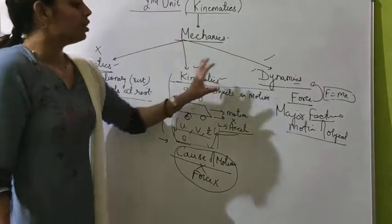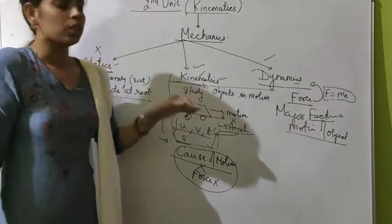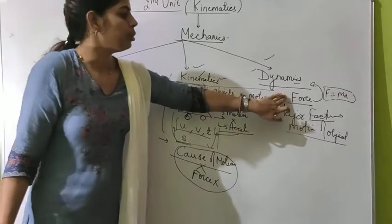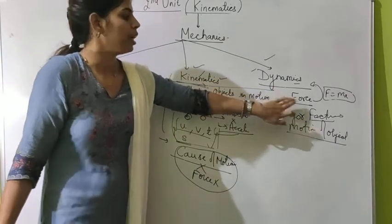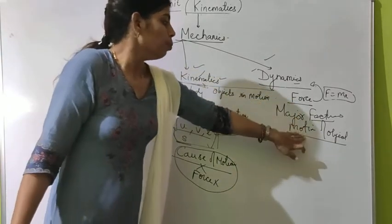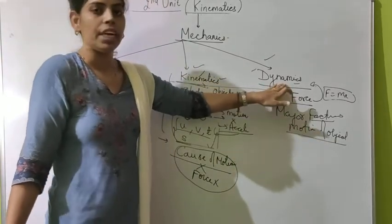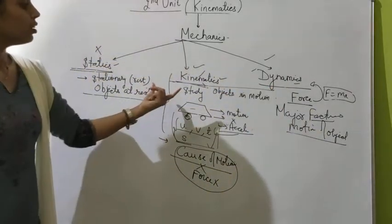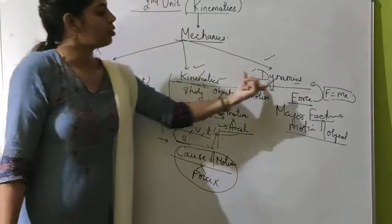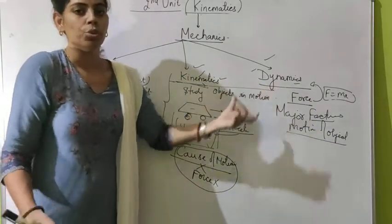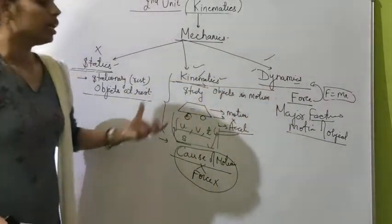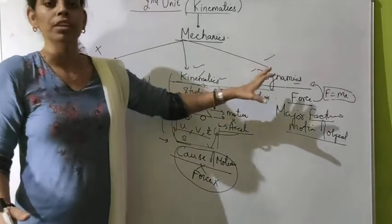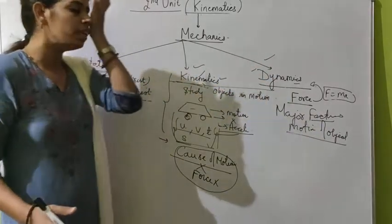The famous equations V = U + AT, S = UT + ½AT², and V² - U² = 2AS are studied under kinematics. The famous equation F = MA is studied under dynamics. This is the major difference between the two branches.